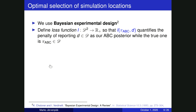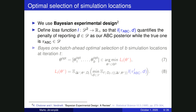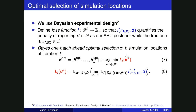L here denotes a loss function that tells the penalty of reporting D as our ABC posterior while the true one is pi_ABC. From here I can get a Bayes one-batch-ahead optimal criterion for selecting simulation locations. In this work we are concerned with the case where I want to run B simulations in parallel to take advantage of parallel computing. In our previous work we only considered the sequential case where we choose one parameter at a time, so B was one.